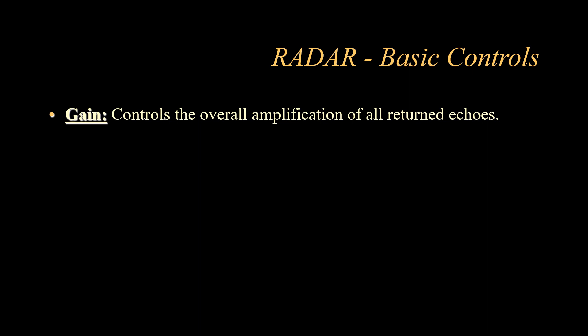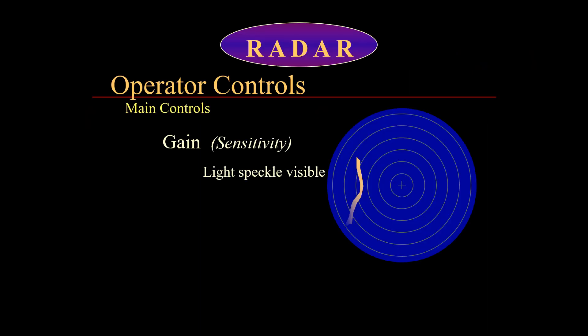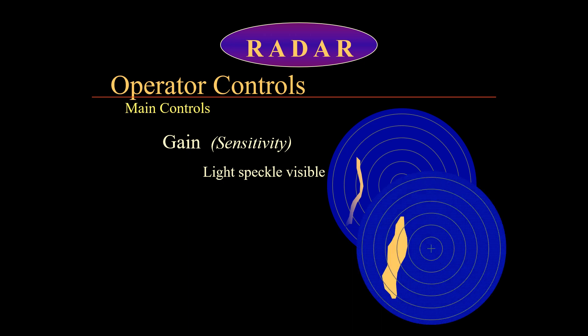The next switch is the gain switch, which is used to control the overall amplification of all returned echoes to enable the operator to see targets on the display. The radar sends radio waves to the target and receives the echo back, but the received echo is sometimes not strong enough to be processed and displayed. The gain switch amplifies the echo, making it stronger to be processed and displayed on screen. You can see how the gain switch amplified the target, making it more visible and easier for the operator to distinguish its features.